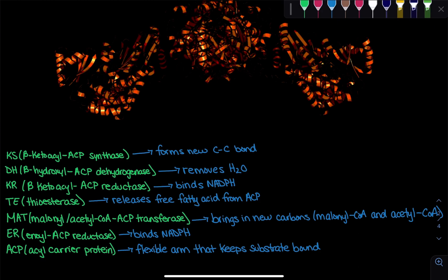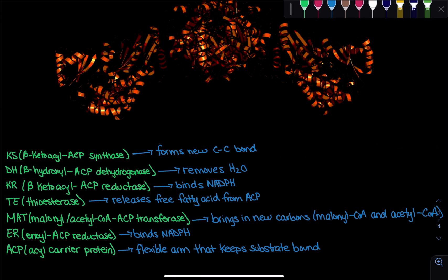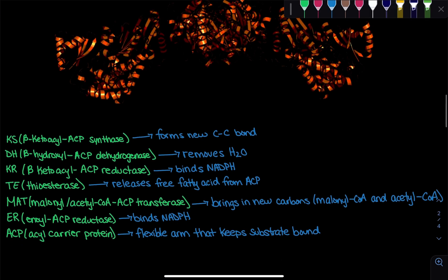When we talk about fatty acid synthesis, we are taking two-carbon units coming from malonyl CoA and adding that onto our growing fatty acid chain. Each time we add a malonyl CoA, we're forming a new carbon-carbon bond — and that's going to happen at the KS domain.